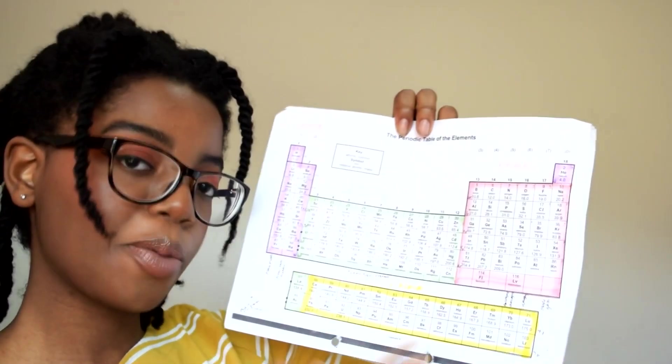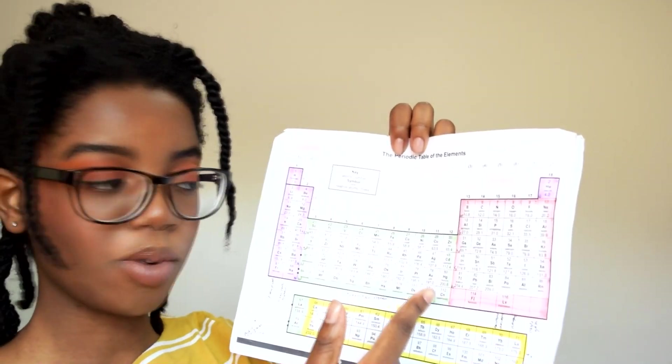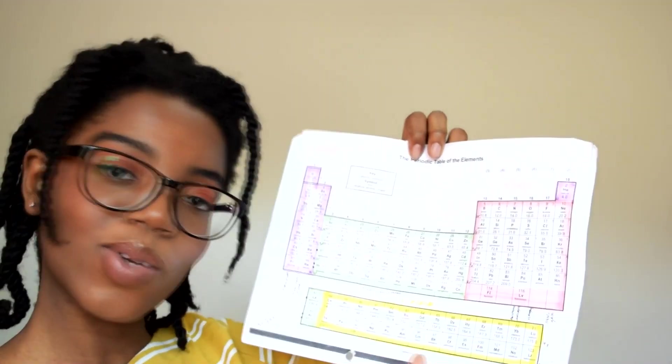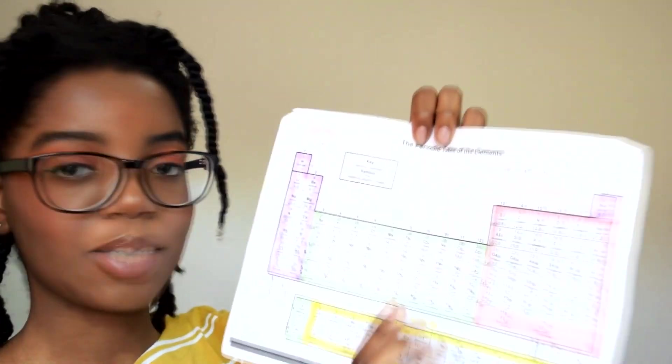Actually on your periodic table you can help yourself and label it. This is one of the first things we did in chemistry and you probably can't see but I just have a few annotations.